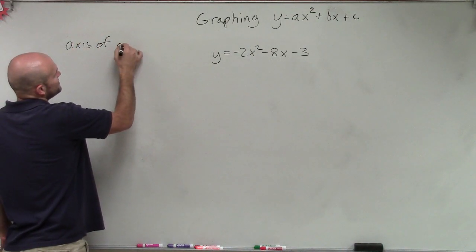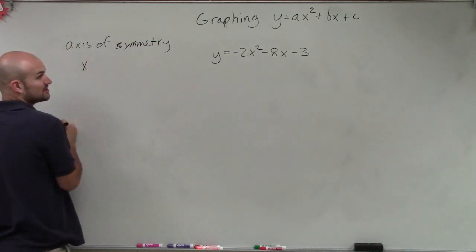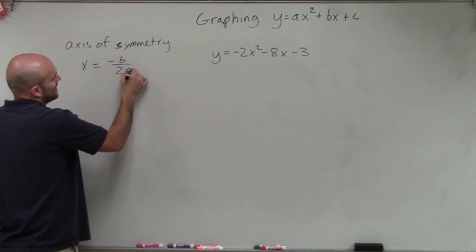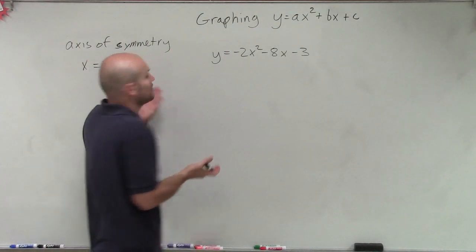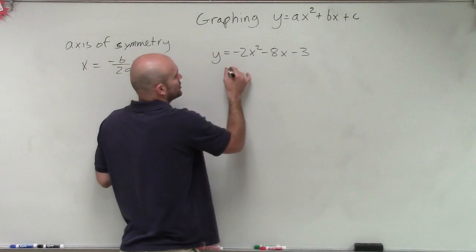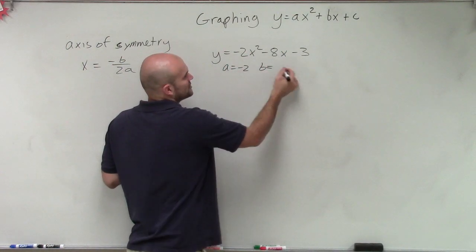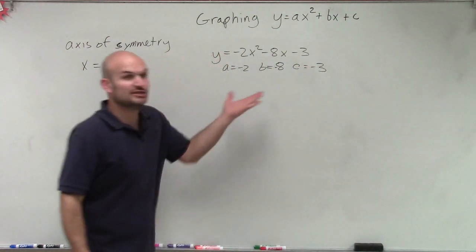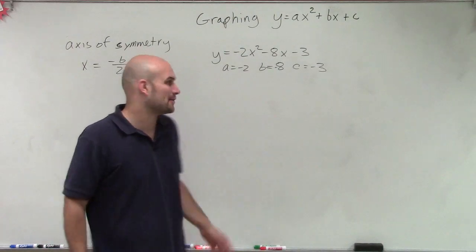Our definition of the axis of symmetry is x equals negative b divided by 2a, which is going to represent a vertical line. In this case, we need to figure out what b and a are. Remember, a is our coefficient of our quadratic term, b is our coefficient of our linear term, and c is going to be our constant. We're not going to use c for the axis of symmetry, but it's good to know.